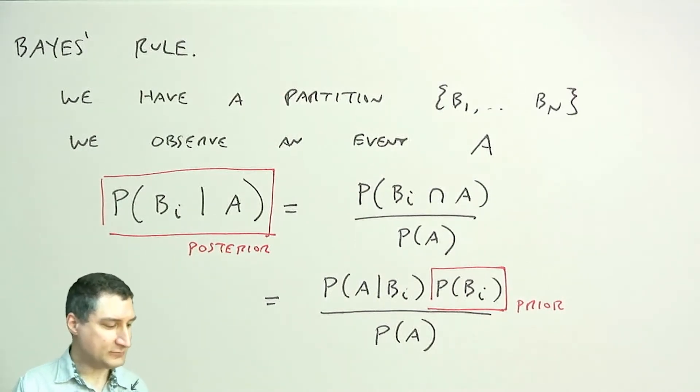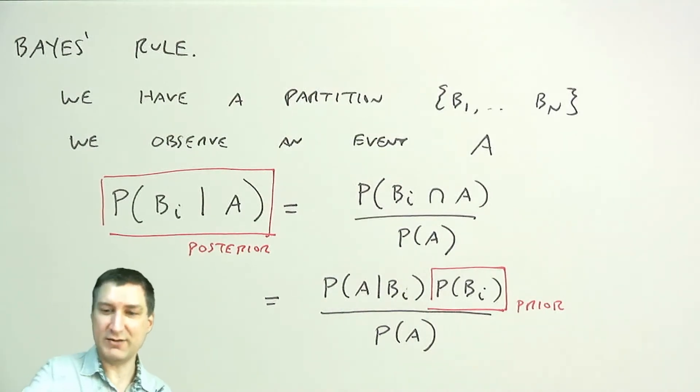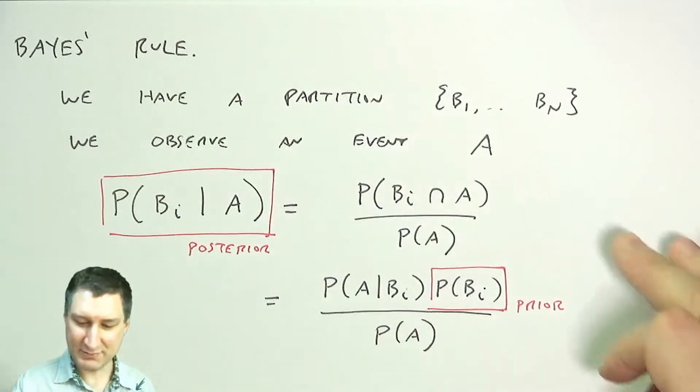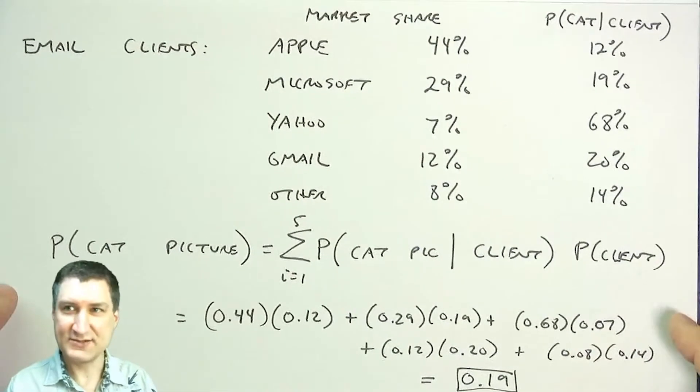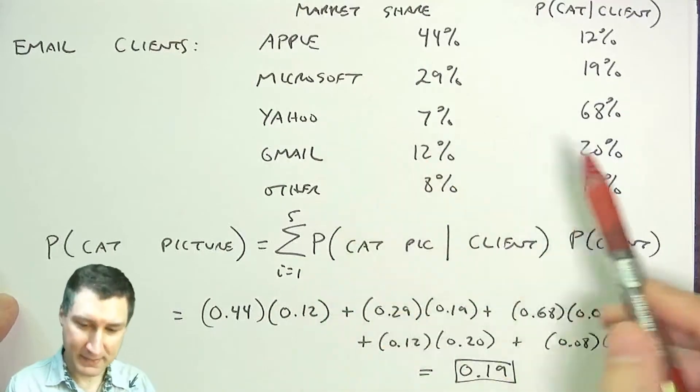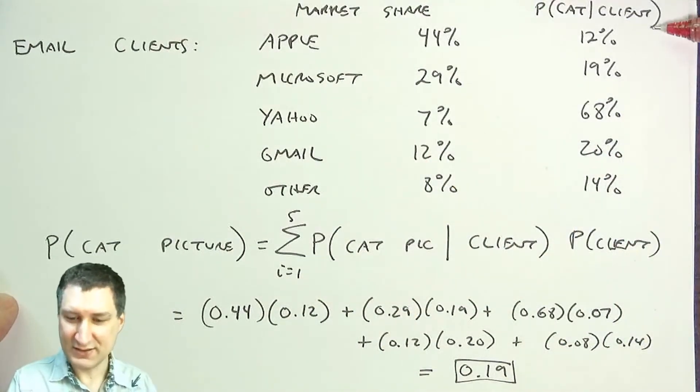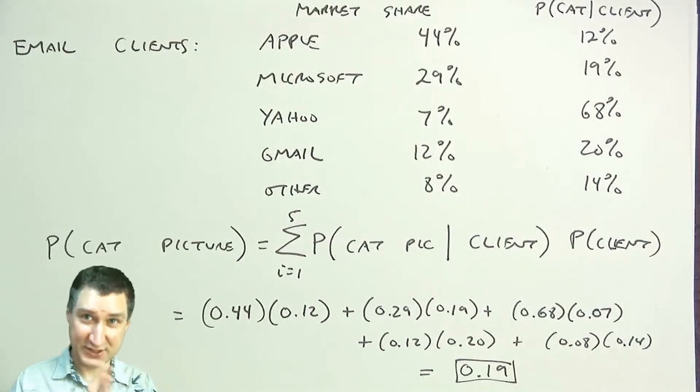And so one example of this, let's kind of bring it back to a specific example. Like last time we were talking about this cat pictures going over the internet. So you may remember this from the previous lecture. This is like saying, I've got certain email clients. They each have certain market share and each of those clients, their users email cat pictures with these conditional probabilities.